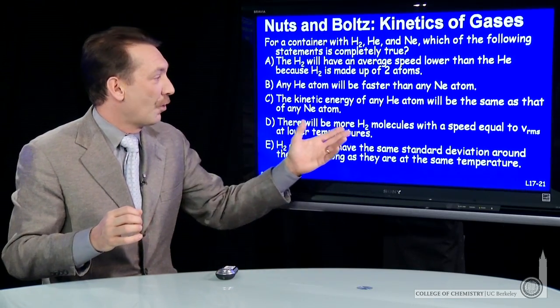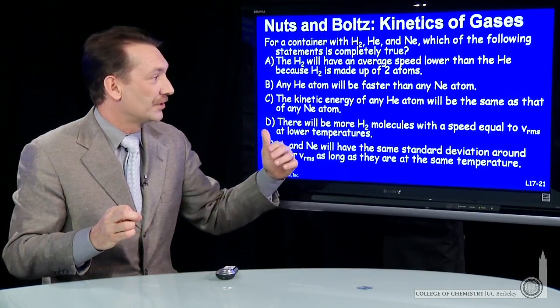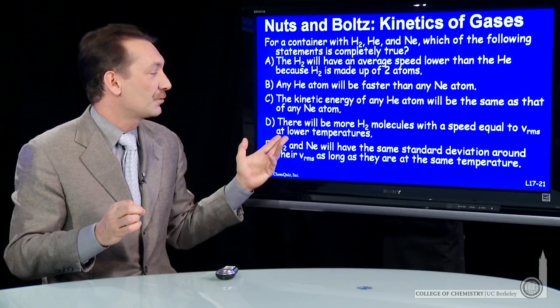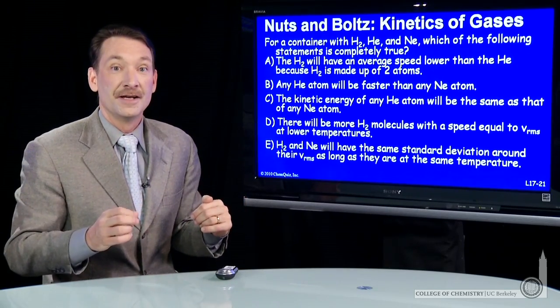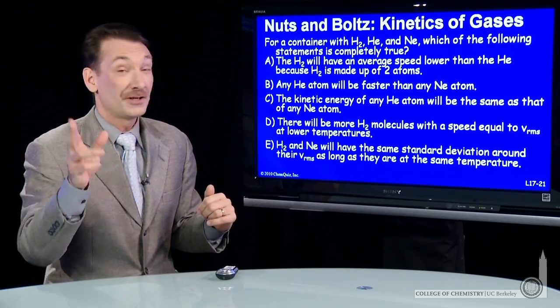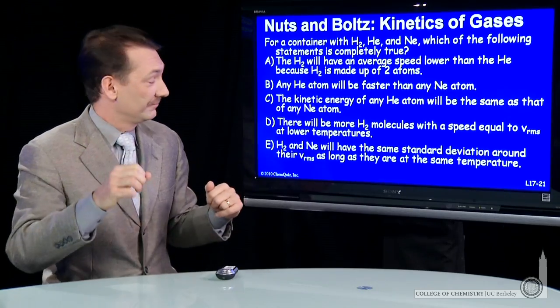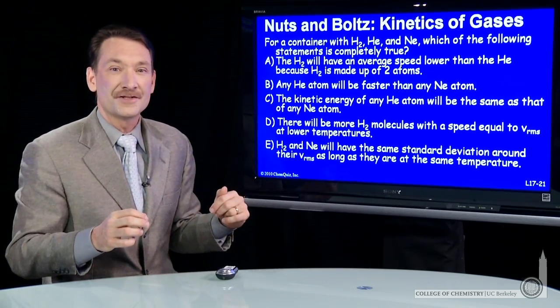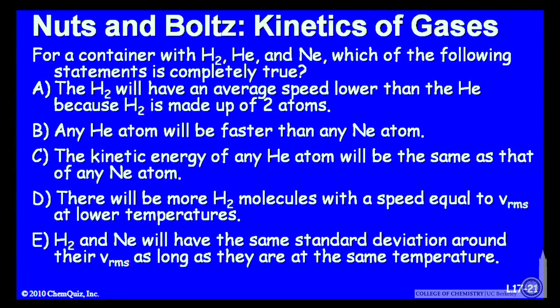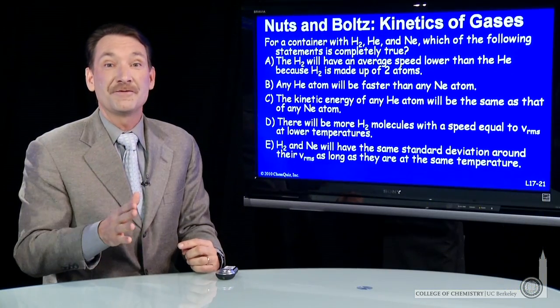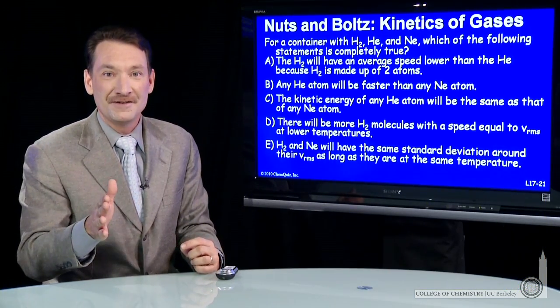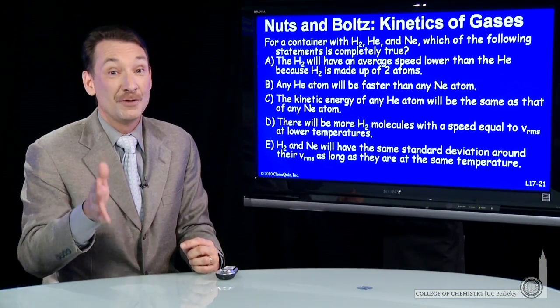Statement D — there will be more hydrogen molecules with a speed equal to the root mean square speed at lower temperatures — is very compelling, so let's come back to it. Statement E: hydrogen and helium will have the same standard deviation around their root mean squared velocity as long as they're at the same temperature. Again, the same temperature but different masses means the standard deviation about the mean will be different. So E is incorrect.